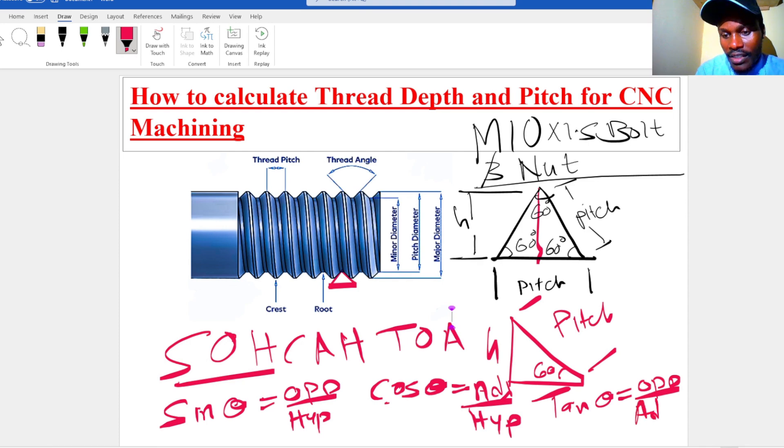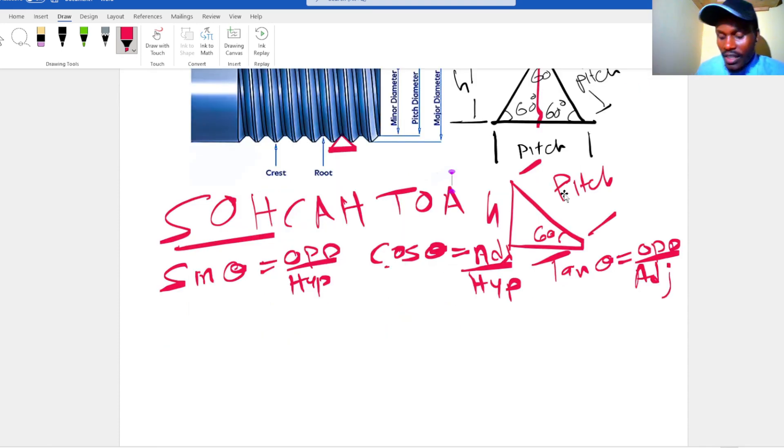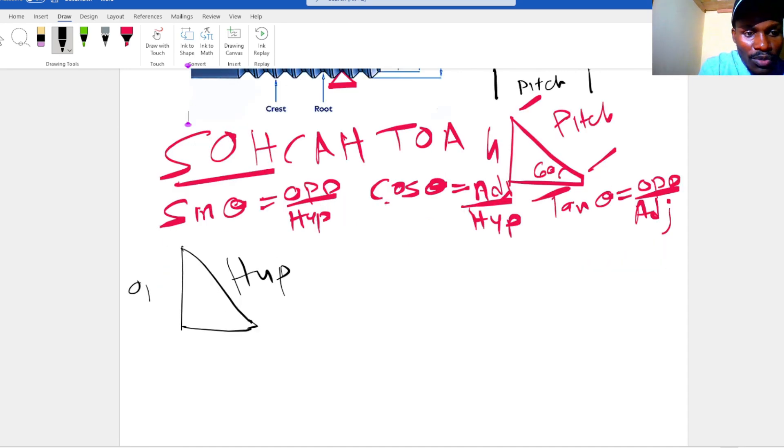Now from this triangle, we see we have the hypotenuse, this is opposite, and this is adjacent to this angle 60. Now for us to get the opposite distance, which is our height,